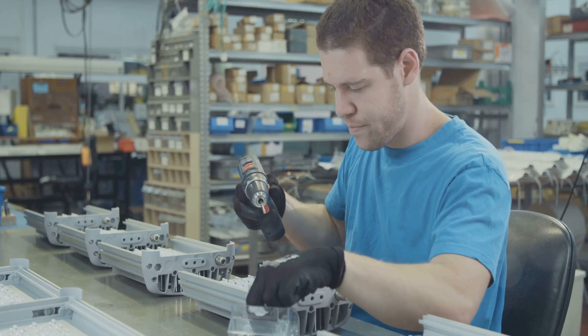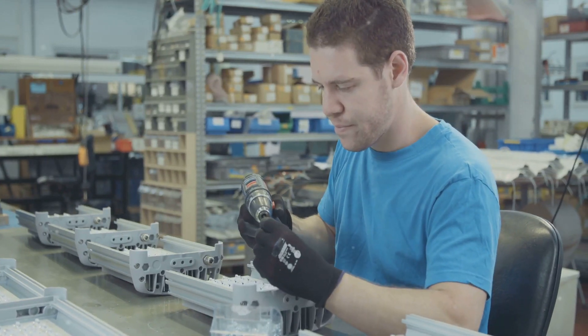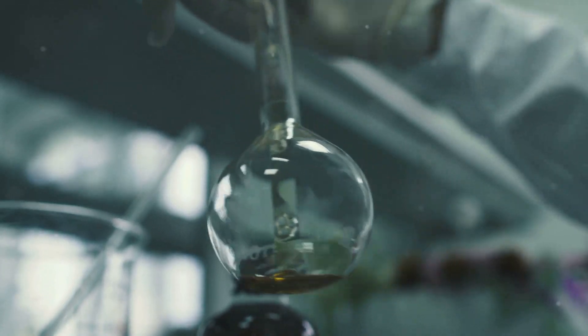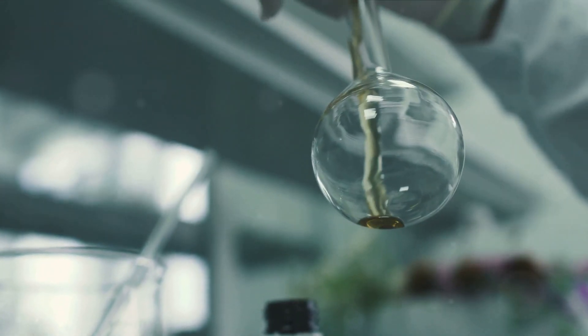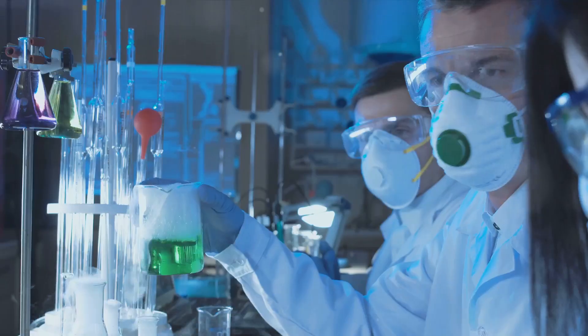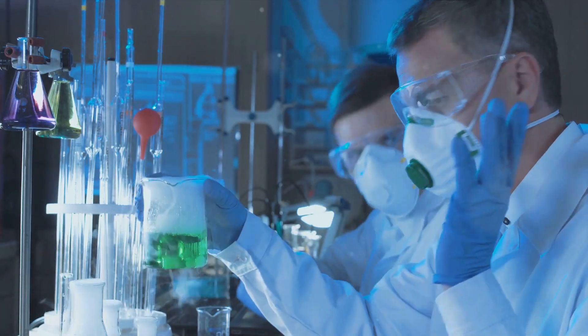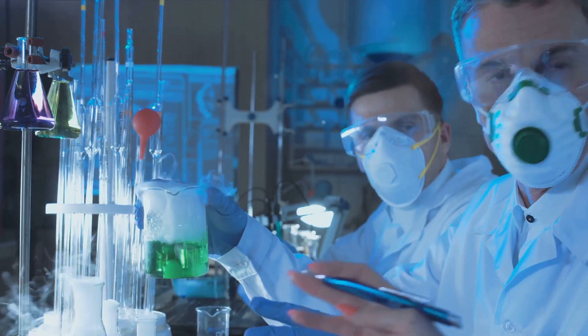The manufacturing process begins with the creation of two separate solutions. The first solution contains a chemical called phenyl oxalate ester, while the second solution is composed of a fluorescent dye and hydrogen peroxide. These solutions are produced in large batches, each carefully measured and mixed to ensure the correct chemical composition.